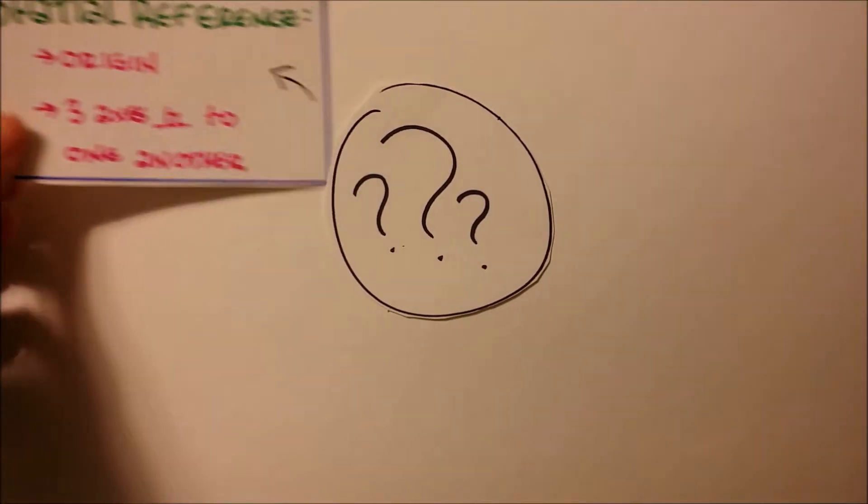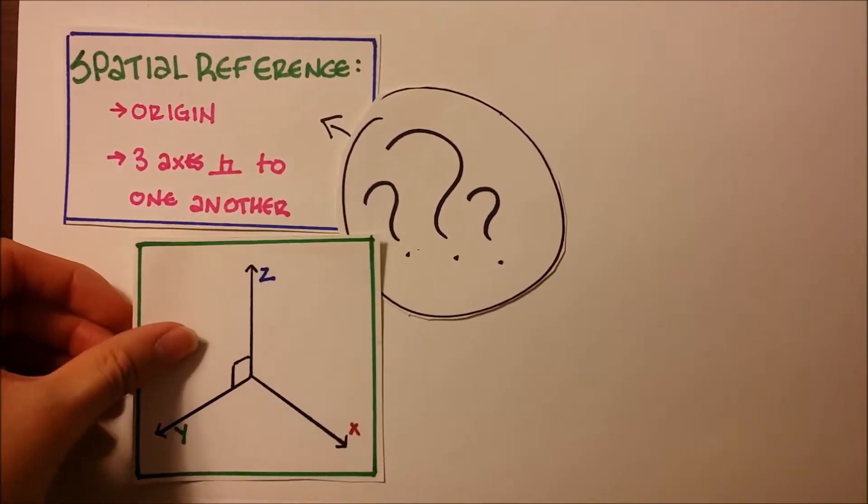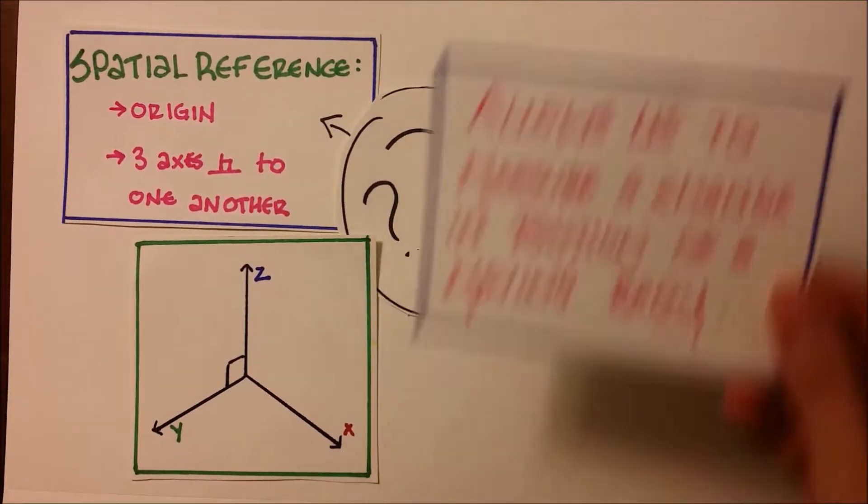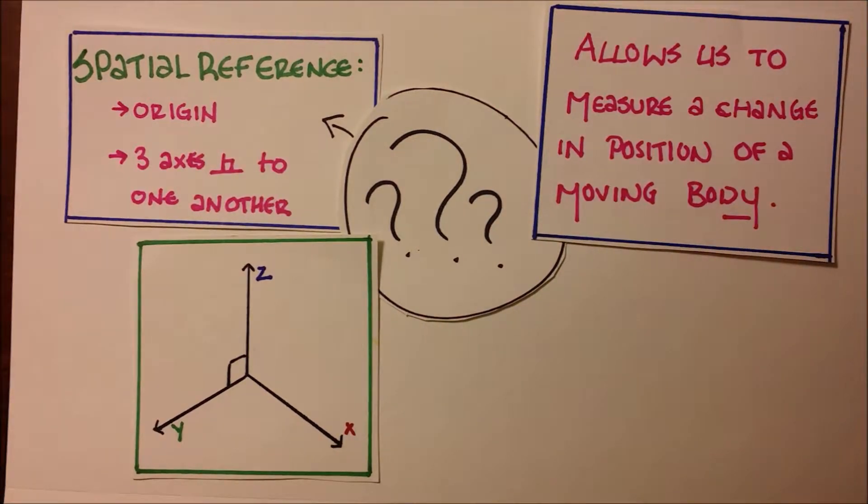A frame of reference is a spatial reference composed of an origin and three axes that are perpendicular to each other. It allows us to measure a change in position of a moving body.